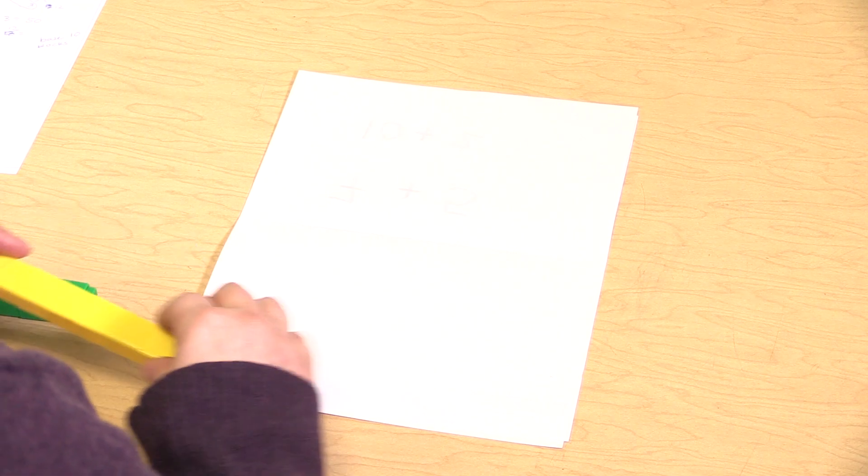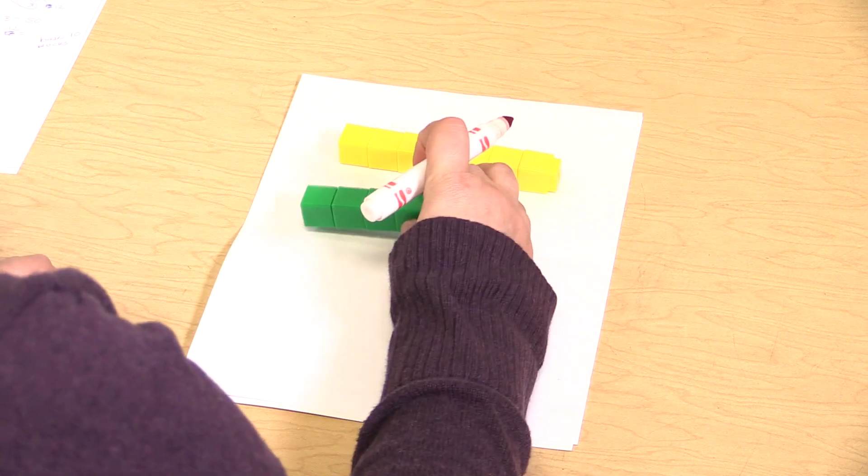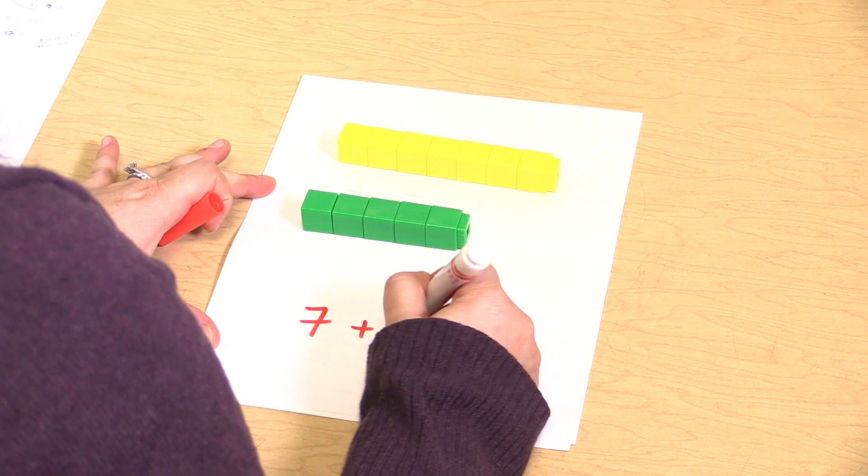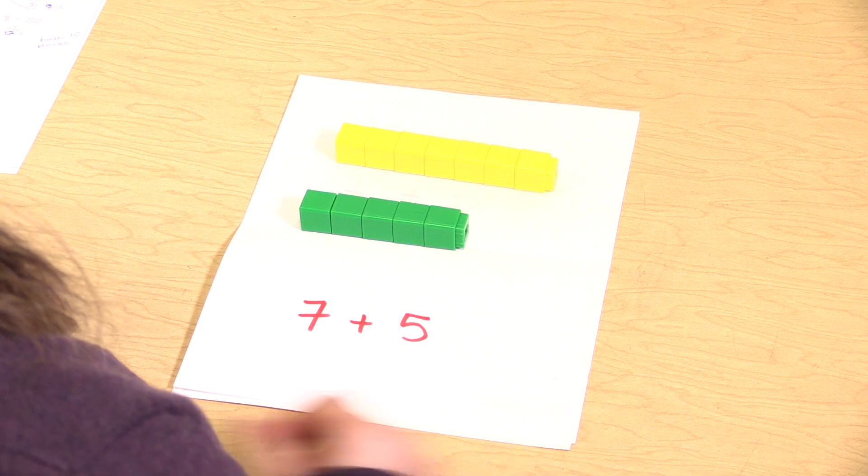Another way that students could make ten to add is with cubes. So if we were to have seven plus five, students would be able to take the cubes and break them apart to make a ten.